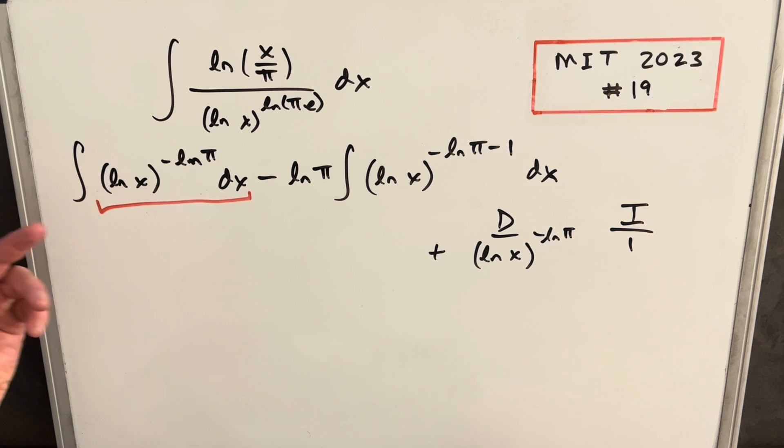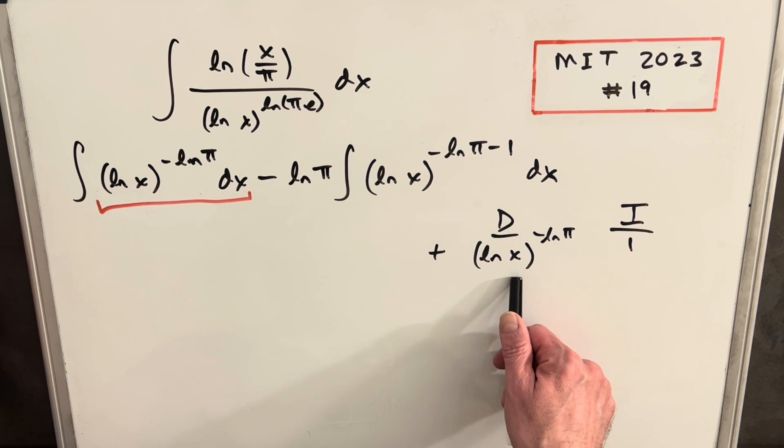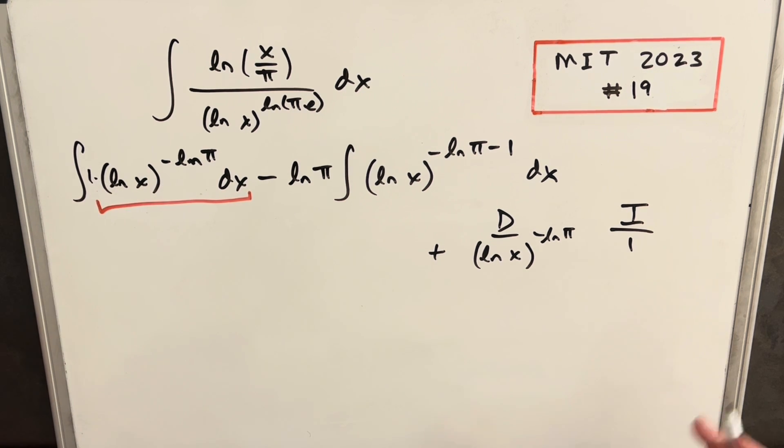The whole key with when you're using integration by parts on natural log, you almost always want to differentiate the natural log, because we don't really know how to integrate it. And then I'm just going to create a 1, so that I can integrate 1 real easy.